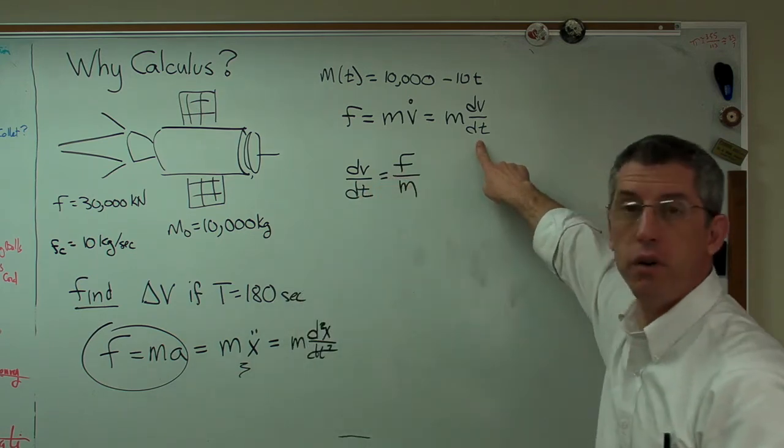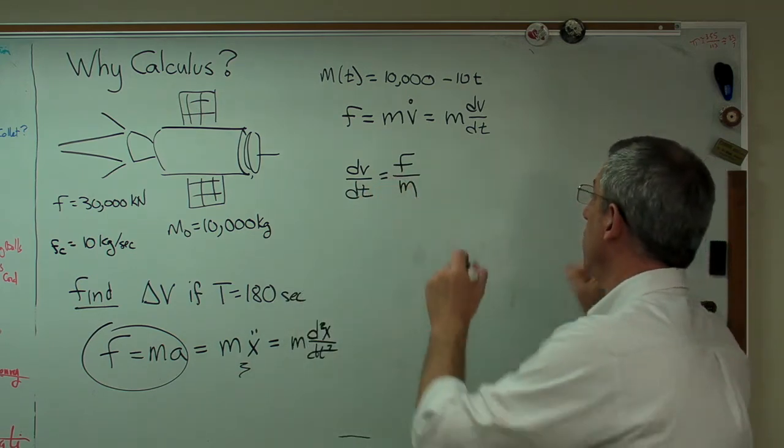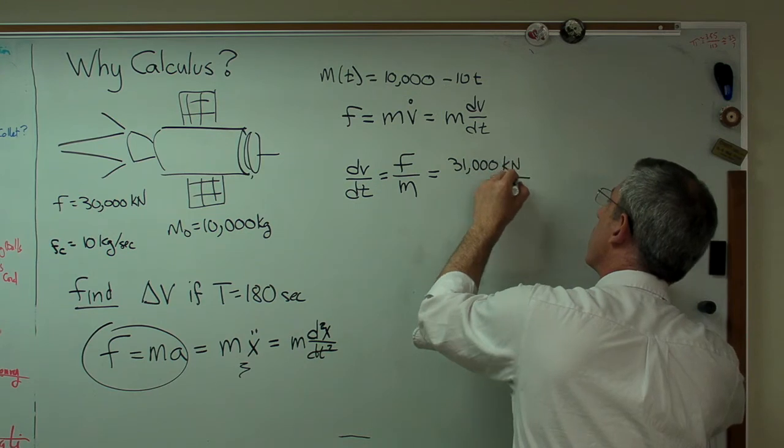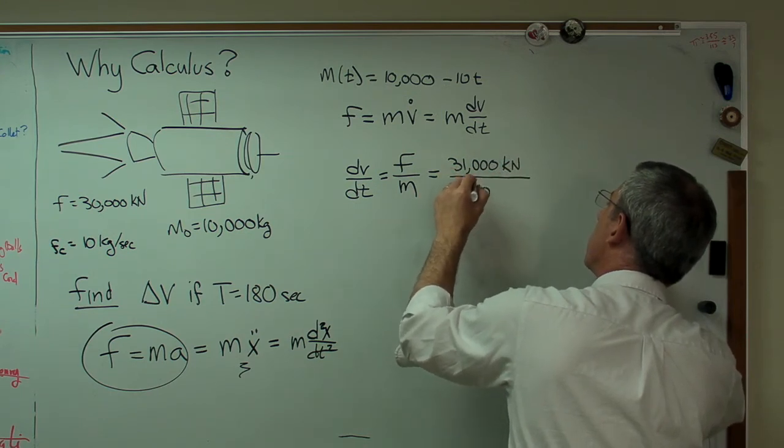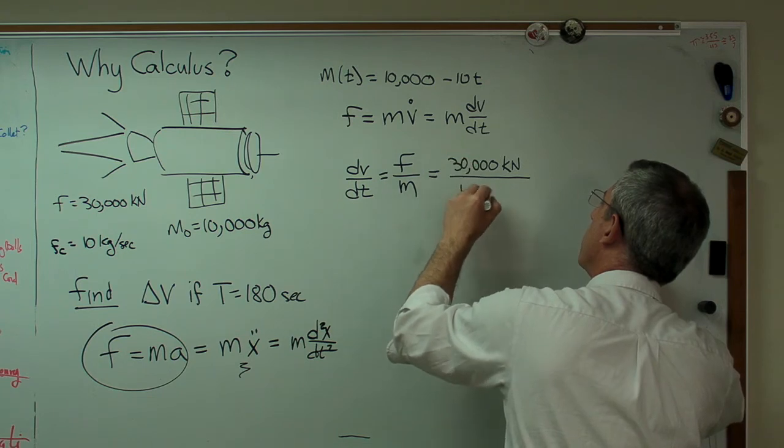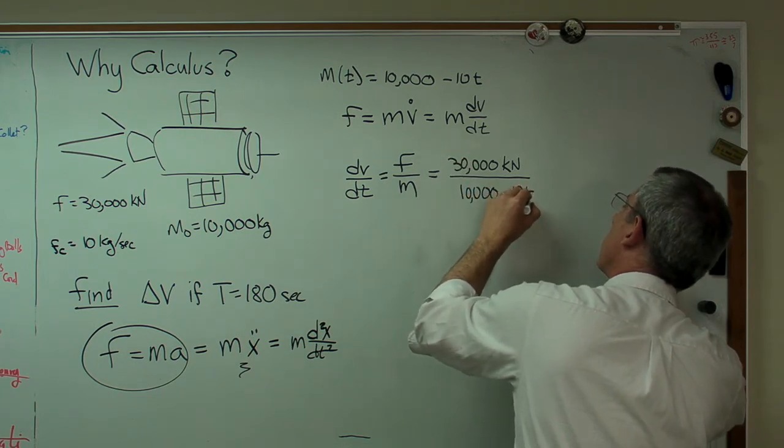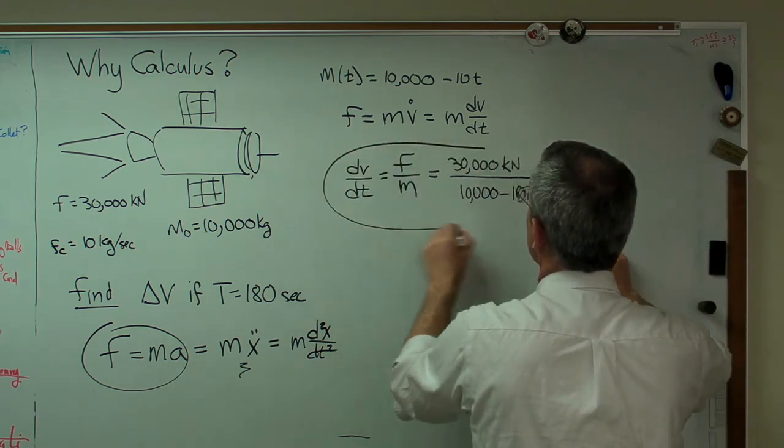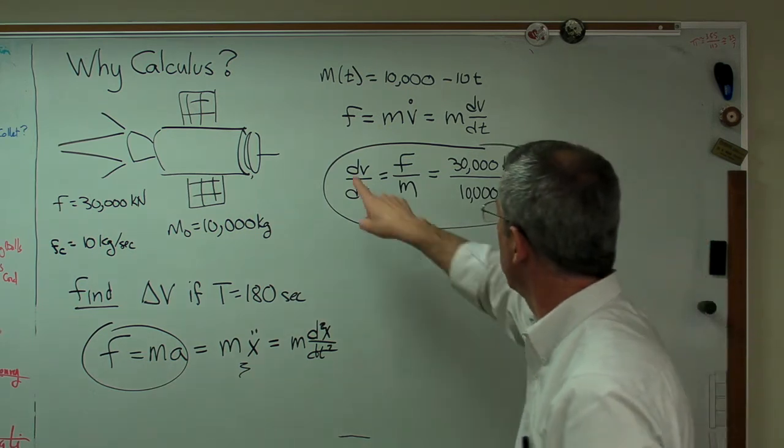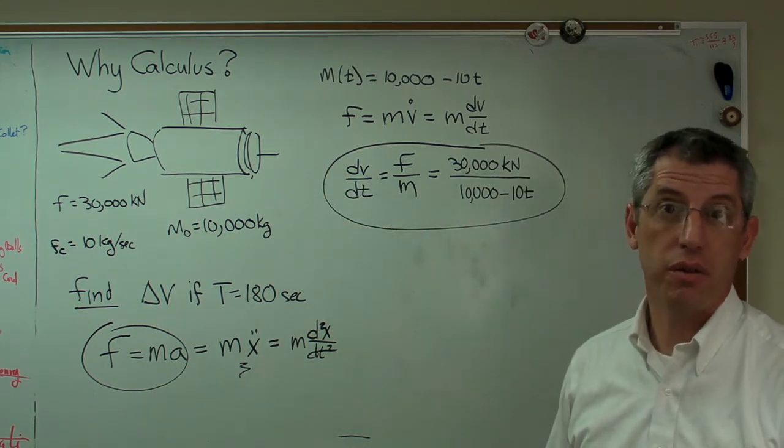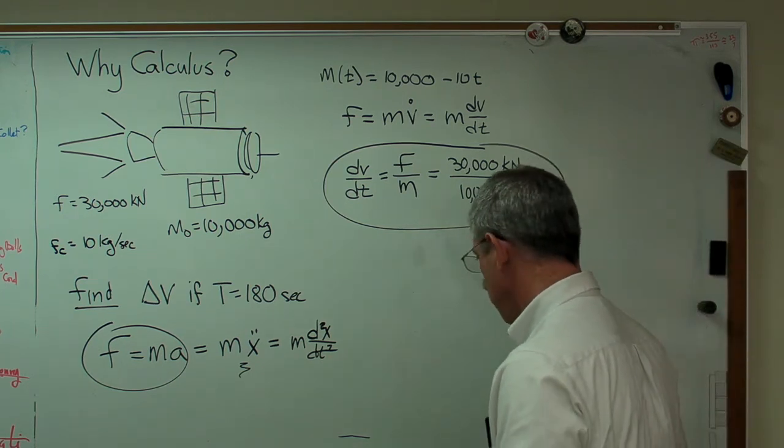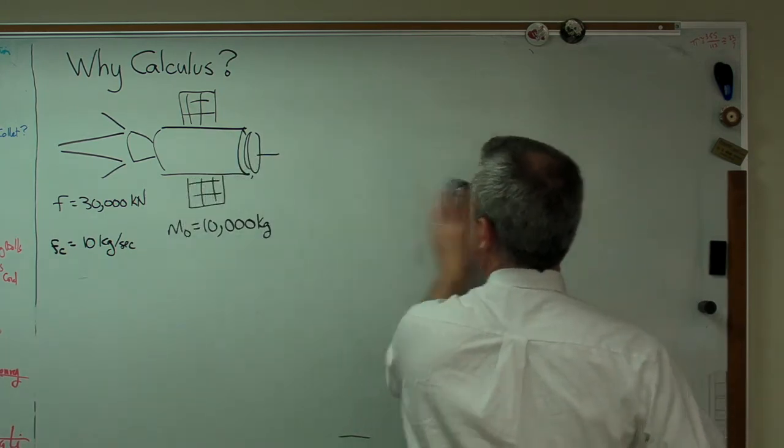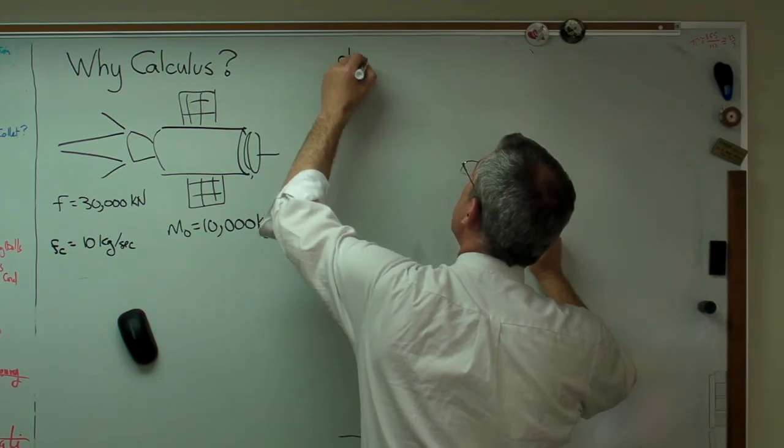All I did was rearrange that expression a little bit to get that. We already know all this stuff. That's 30,000, not 31,000. There we go. All right, now that's the governing equation. If you can solve that, we can find that dv or delta V is how we're going to write it out. Now let me clear out some space here. So I know that dv/dt equals 30,000 over 10,000 minus 10t.